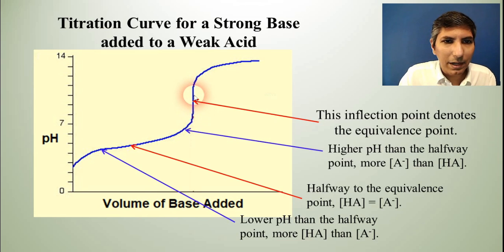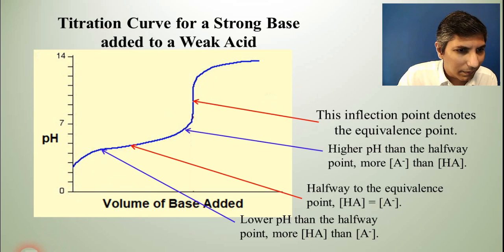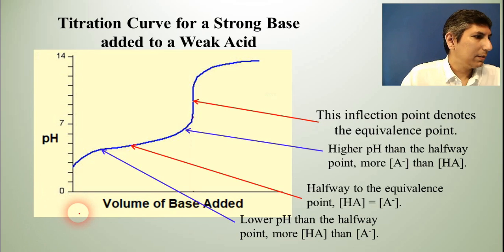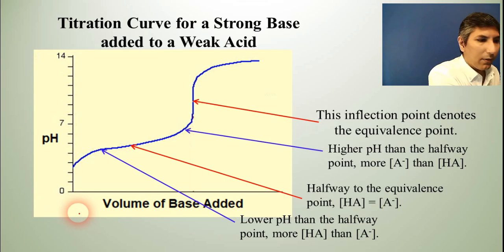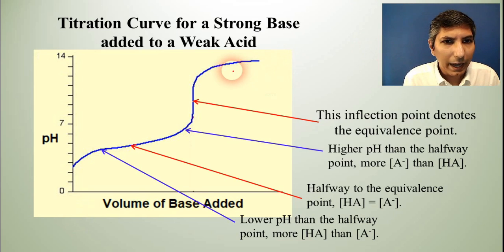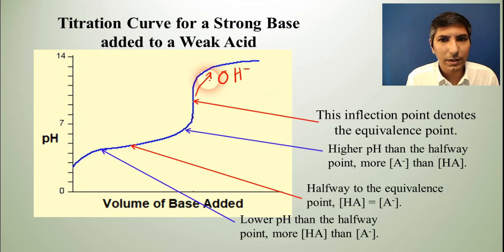What's going to predominate after the equivalence point? Notice where the pH is — it's very high. And think about what we're adding. The substance that predominates here is the hydroxide, which predominates from past the equivalence point because lots of hydroxide is still being added.